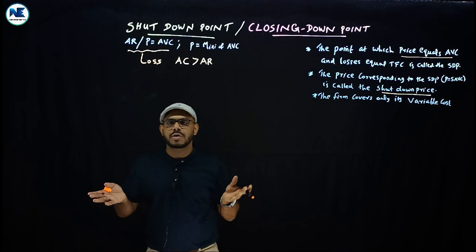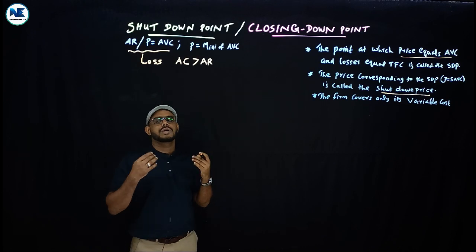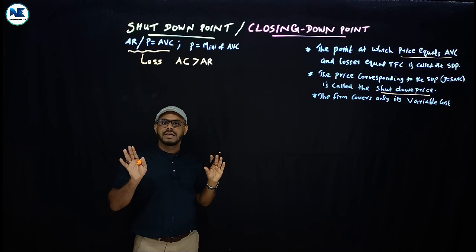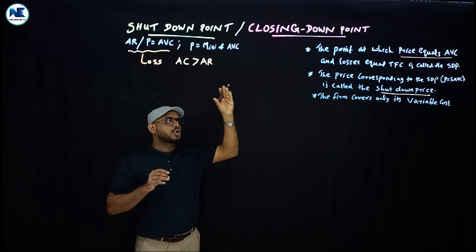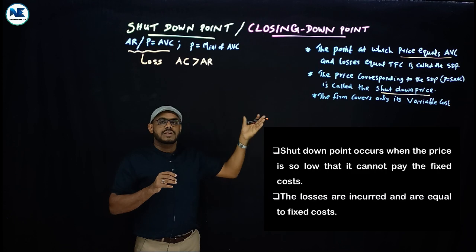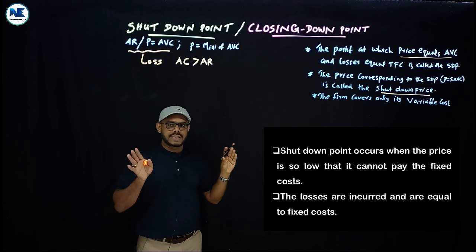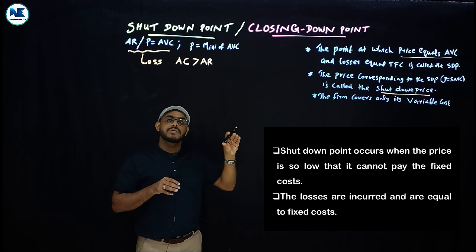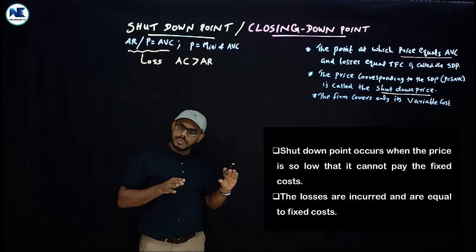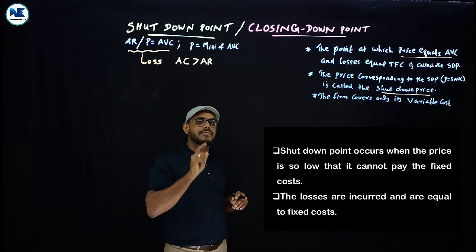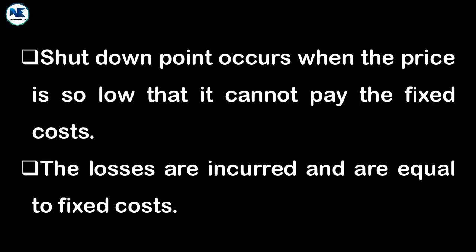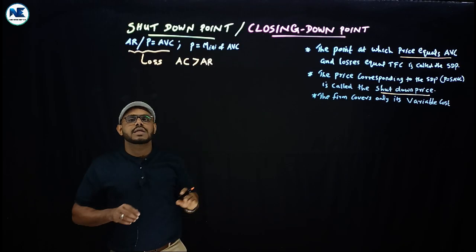When average revenue just covers average variable cost, the revenue received by the firm is just enough for variable cost. The firm's losses at this point equal total fixed cost — it cannot cover fixed costs at all. Since fixed costs are not being recovered, the firm will choose to close down.